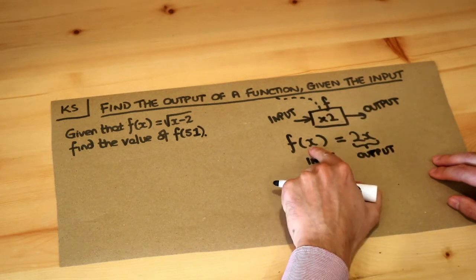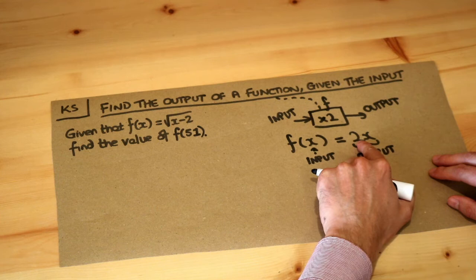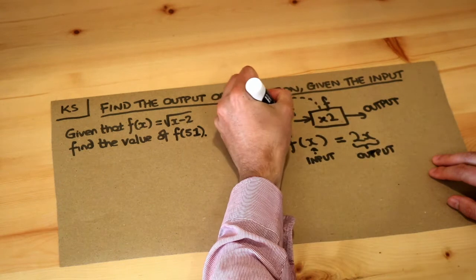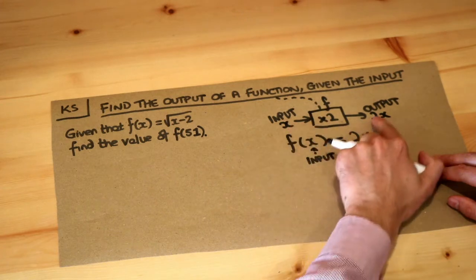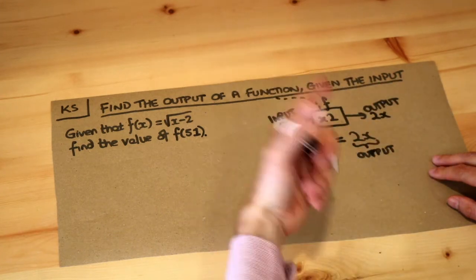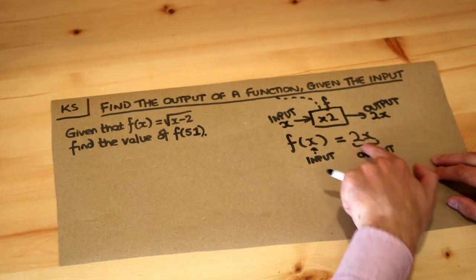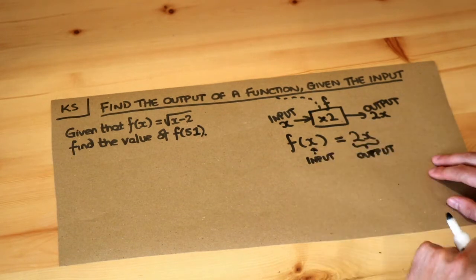So it's saying you're taking an input x and you're outputting 2x. So if the input is x, the output is 2x. So for example, if the input was 4, the output would be 2 times 4, which is 8. So 2x is representing twice whatever the input is.